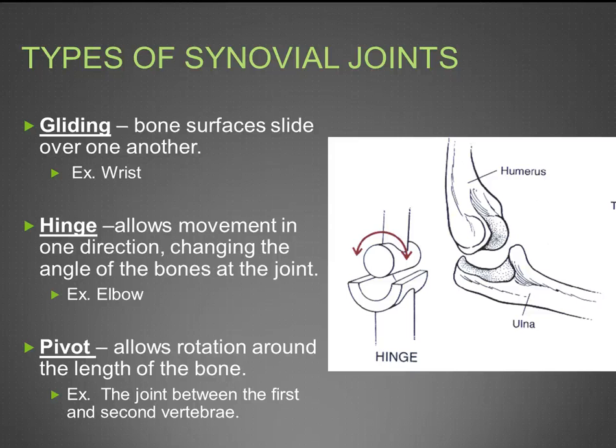Next is a pivot joint, which allows rotation around the length of a bone. For example, the joint between your first and second vertebrae allows you to shake your head left to right — when you say no, you pivot between those first and second vertebrae.